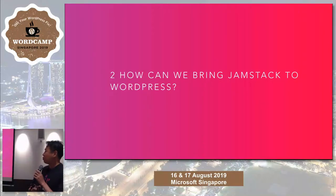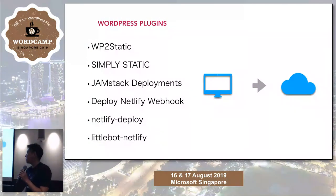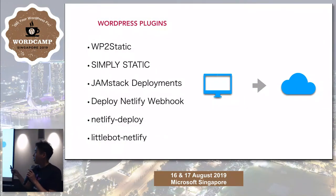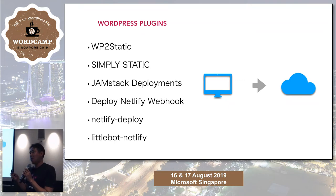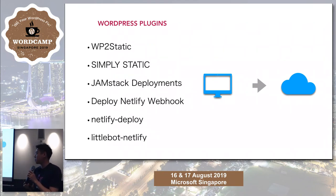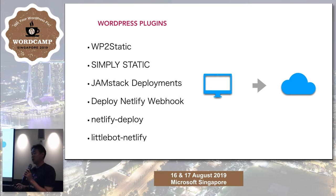My second topic is how we can bring JAMstack to WordPress — I'd like to share three patterns. The first and simplest pattern is to go static, because there are many plugins to convert a site to static. You can also deploy to static site hosting like Amazon S3, Netlify, GitHub Pages, and so on. It's a good idea because we can easily try the JAMstack approach with our existing site.